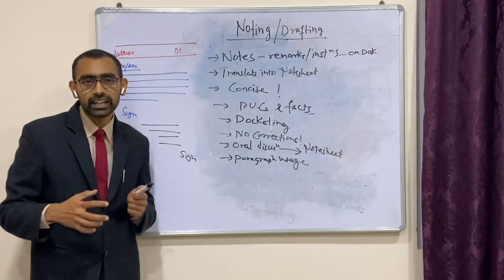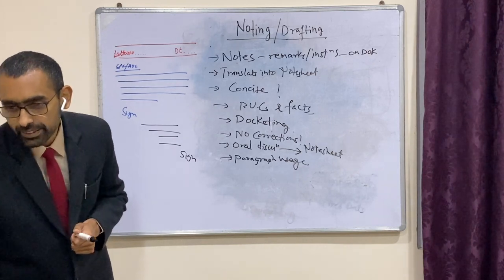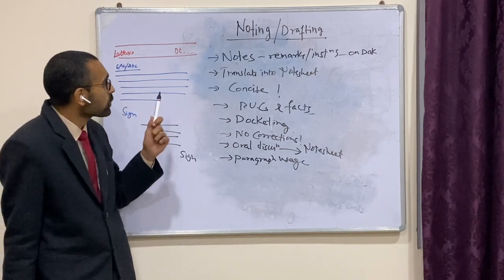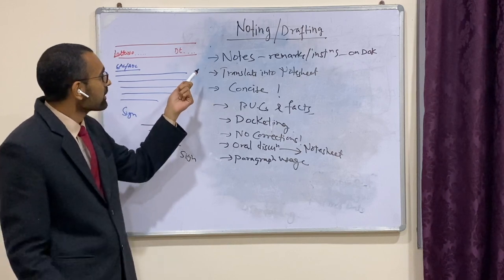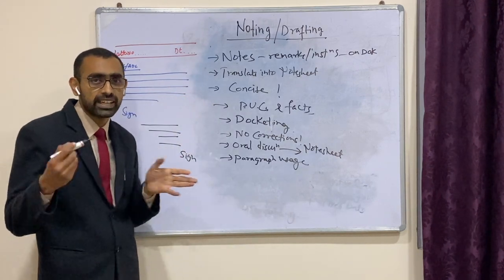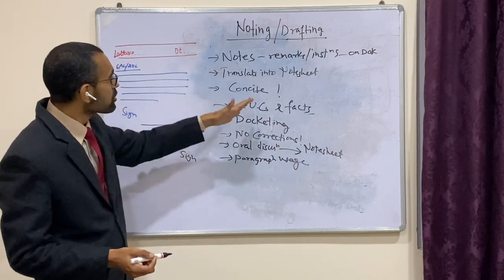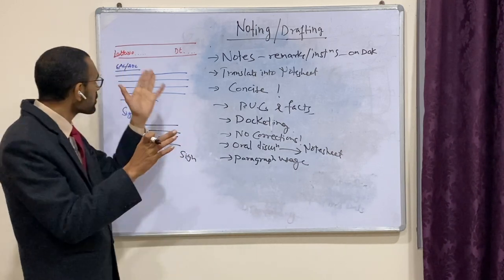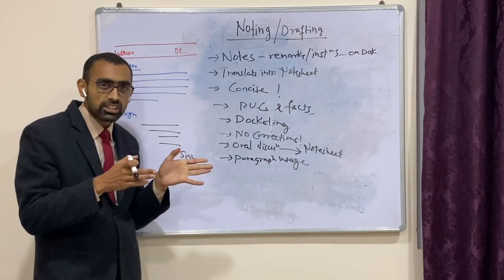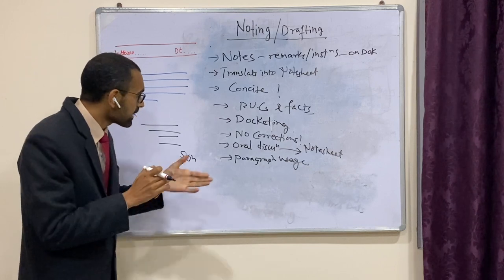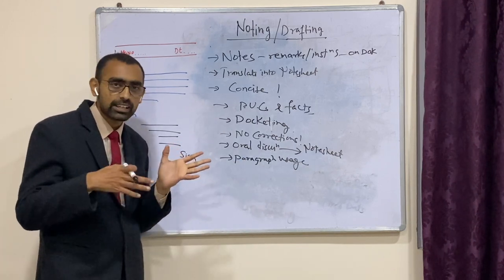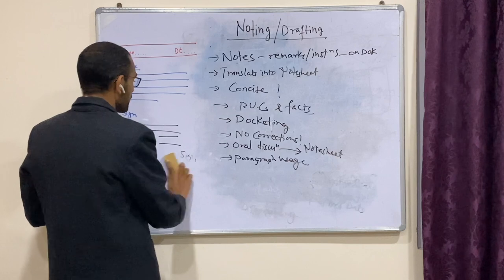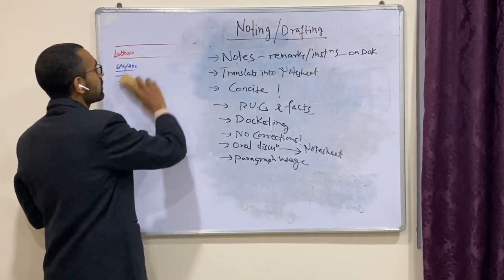Docketing is very important. Regarding noting, let's quickly recollect: notes are not just on the note sheet but also on the PUC — everything should translate to the note sheet. Your note should be concise. Everything from the PUC should be included. Docketing should be done. No corrections — only subsequent notes should reflect the issue. Oral discussions should translate to the note sheet. Use paragraph style for bigger notes. These are the main features of the noting process.